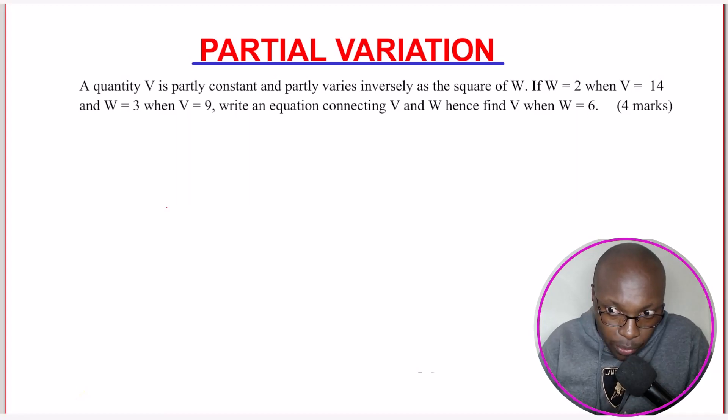A quantity V is partly constant and partly varies inversely as the square of W. If W = 2 when V = 14 and W = 3 when V = 9, write an equation connecting V and W, hence find V when W = 6. So that is a question on partial variation.